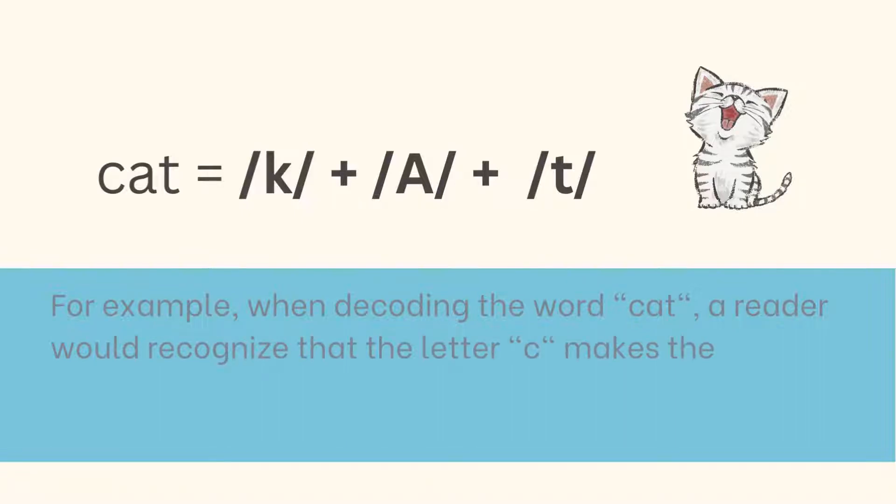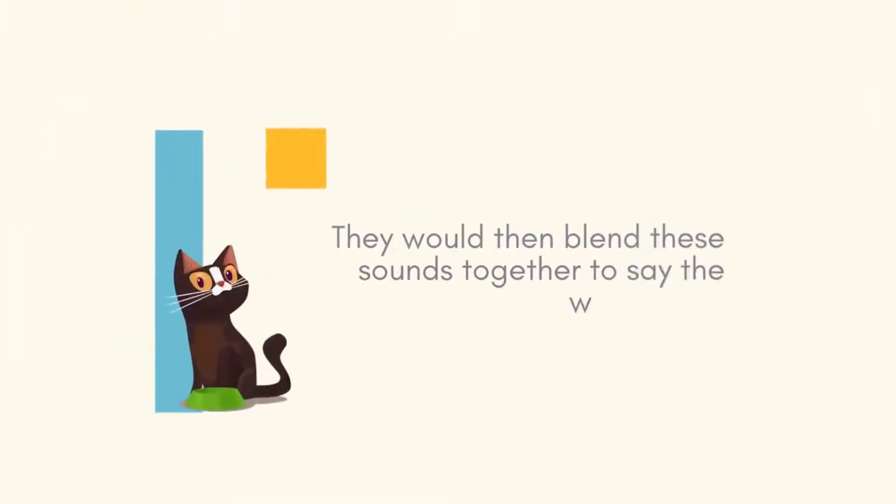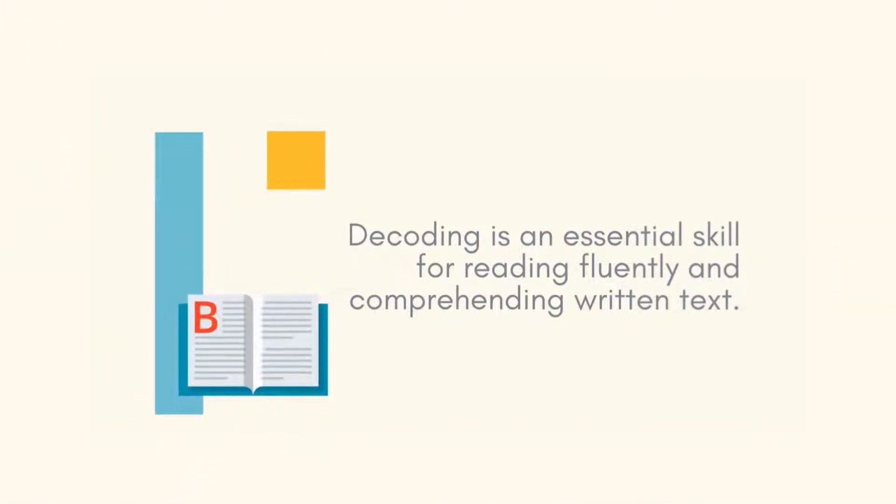For example, when decoding the word cat, a reader would recognize that the letter C makes the K sound, the letter A makes the A sound, and the letter T makes the T sound. They would then blend these sounds together to say the word cat. Decoding is an essential skill for reading fluency and comprehending written text.